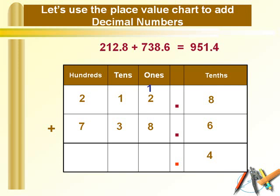Now let's add the digits on the left of the decimal point. First of all, add the digits at the 1's place. So 8 plus 2 plus 1 gives us 11. Place the 1 below the 1's place and take the other 1 on top of the 10's place.